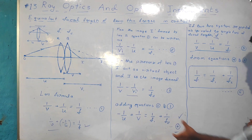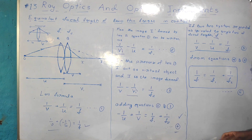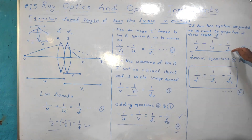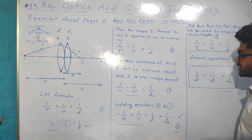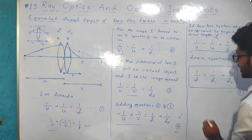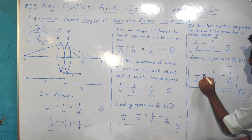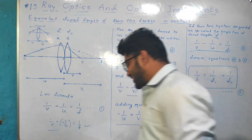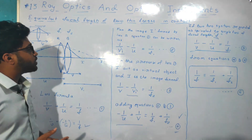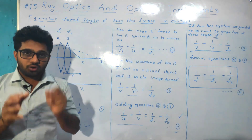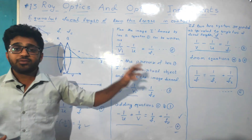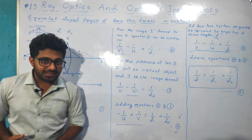From equations 4 and 5, comparing the left-hand sides, we replace 1 by v minus 1 by u with 1 by F. Therefore, 1 by F is equal to 1 by F1 plus 1 by F2. This is the relation for the equivalent focal length of two thin lenses in contact.